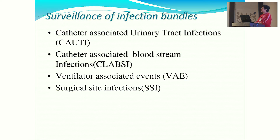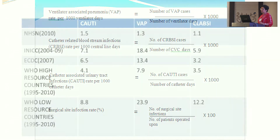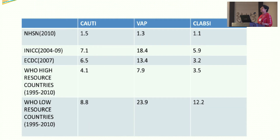The benchmark for these four bundles has been set by WHO and CDC. For CAUTI, WHO gives a benchmark of 4.1 per 1,000 catheter days. For VAP, the range varies from 1.3 to 23.9. For CLABSI, it is 1.1 to 12.2.